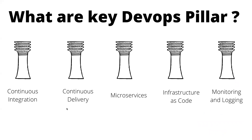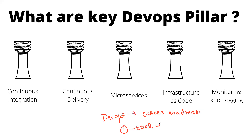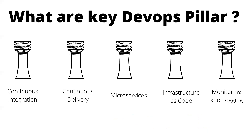As you've seen, the pillars of DevOps also lead you to your career roadmap. If you're wondering what you should learn, here is your answer: learn one tool in each pillar — that is enough. I also forgot to mention that Docker and Kubernetes fall under the microservices section. As a DevOps engineer it is important to know Docker and Kubernetes.